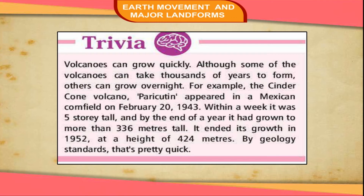For example, the cinder cone volcano Paricutín appeared in a Mexican cornfield on February 20, 1943. Within a week, it was five storeys tall. And by the end of a year, it had grown to more than 336 meters tall. It ended its growth in 1952 at a height of 424 meters.